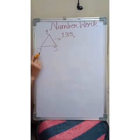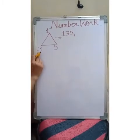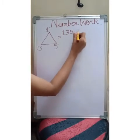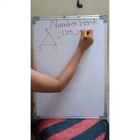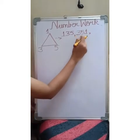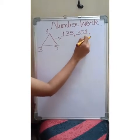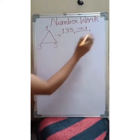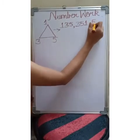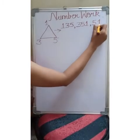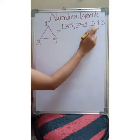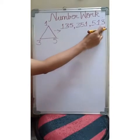Next we will start with three — three, five, one. So this number is three hundred and fifty one. Next we will start with five, one, three — five hundred and thirteen.